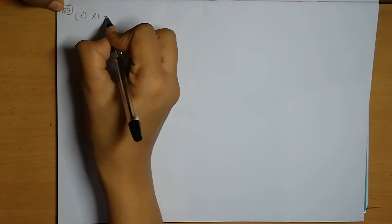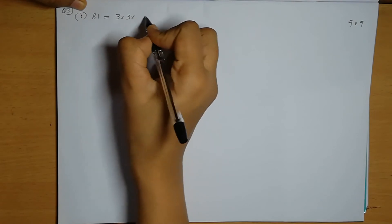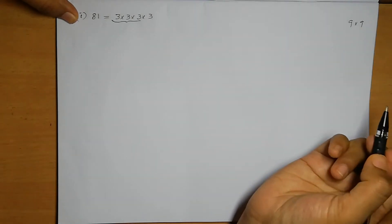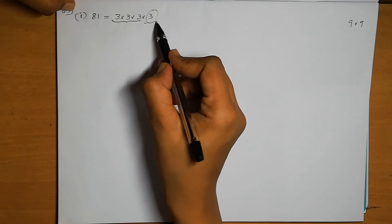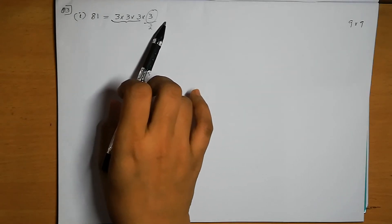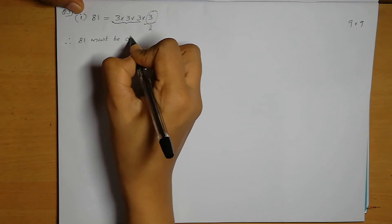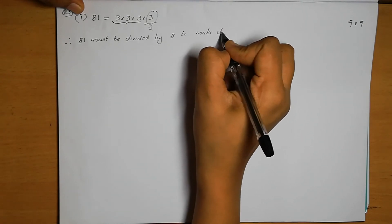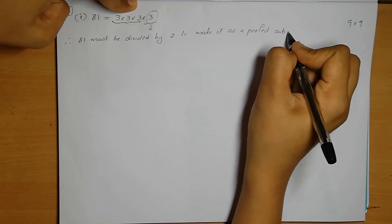First number is 81. We can write 81 = 9 × 9 = 3 × 3 × 3 × 3. One triplet of 3s is formed, but one extra 3 remains without a pair. If we divide by 3, that extra 3 is cancelled. Therefore, 81 must be divided by 3 to make it a perfect cube.